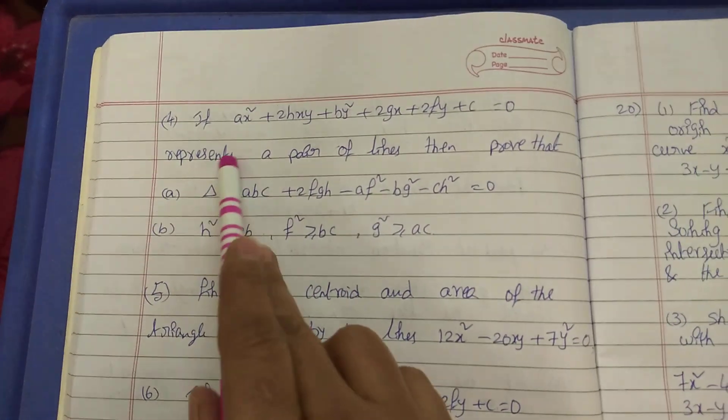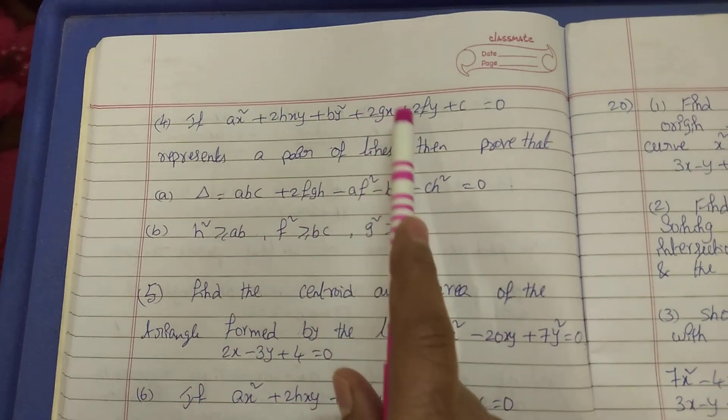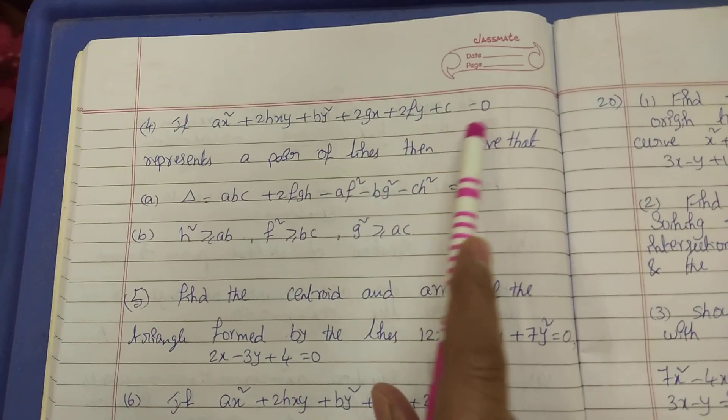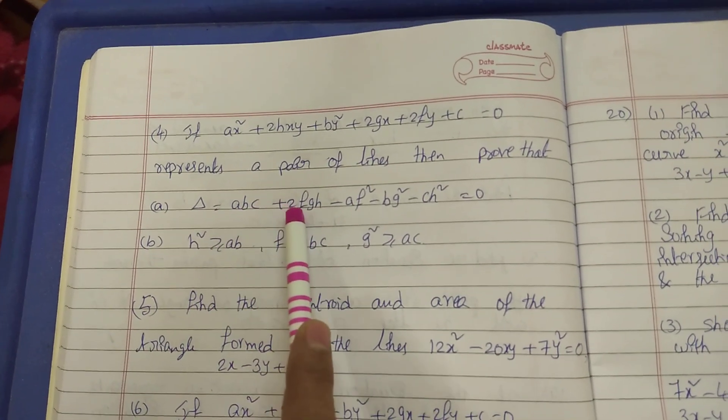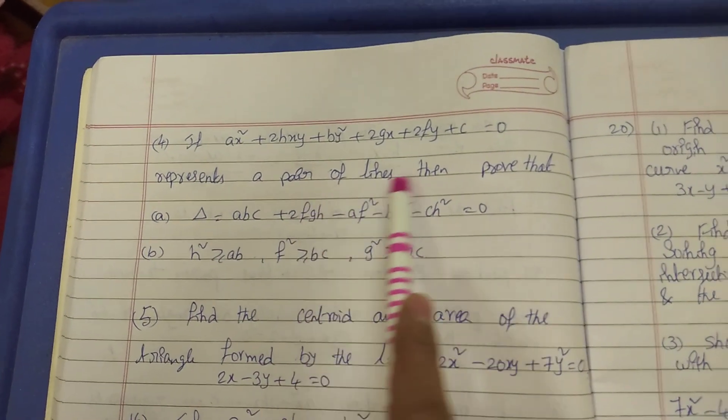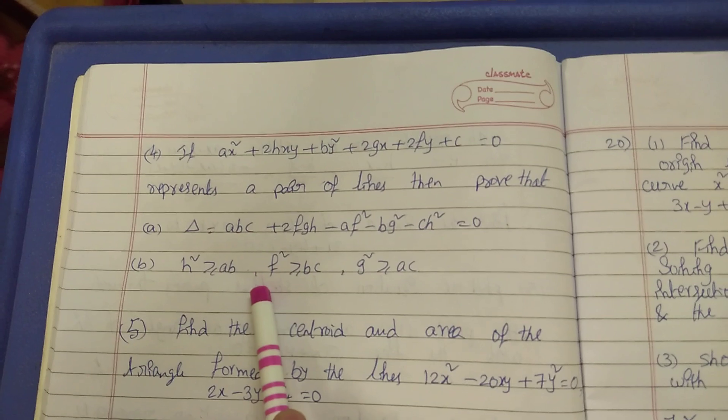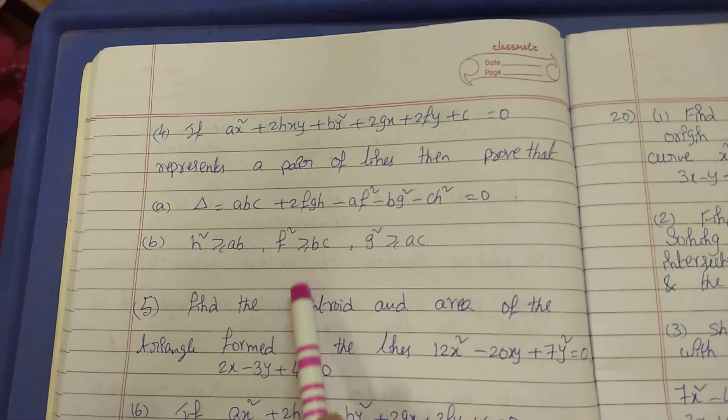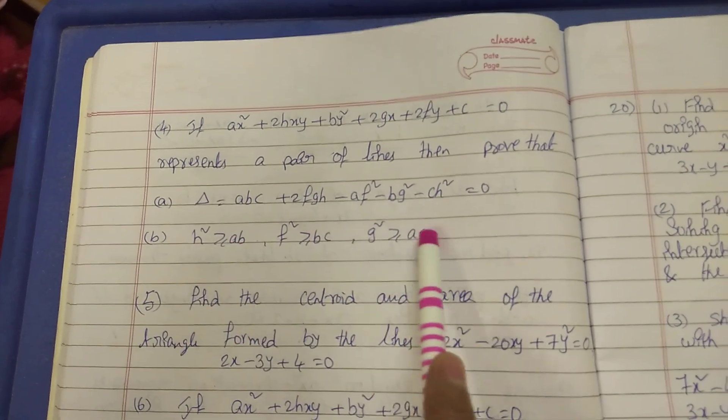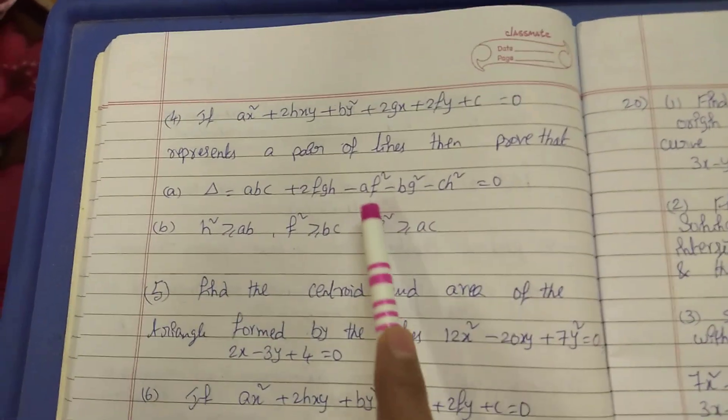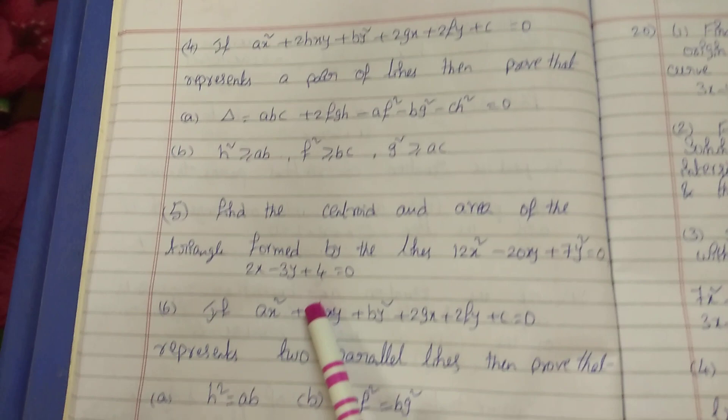Fourth one, listen here. AX square plus 2HXY plus BY square plus 2GX plus 2FY plus C equal to 0. This is delta equal to ABC plus 2FGH, and pair of lines. And conditions here: these 3 you have to do. You have to do delta equal to 0, first condition. Next condition, last condition, these 3, you have to do, you have to prove.